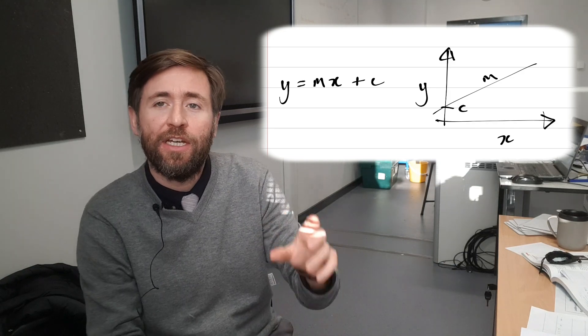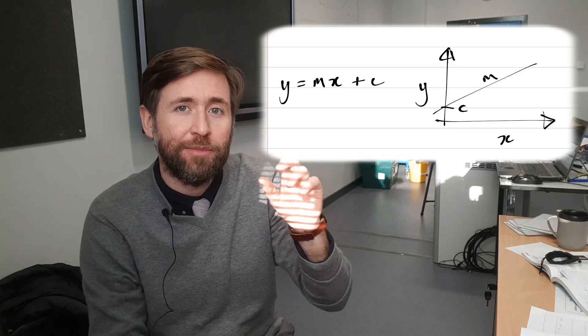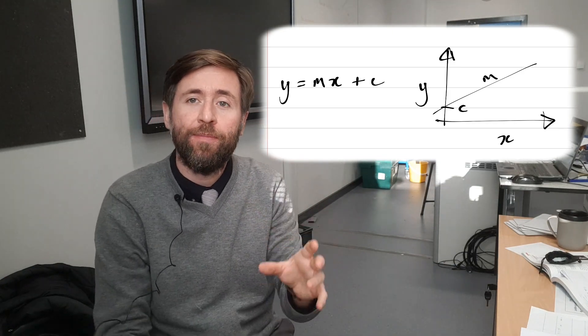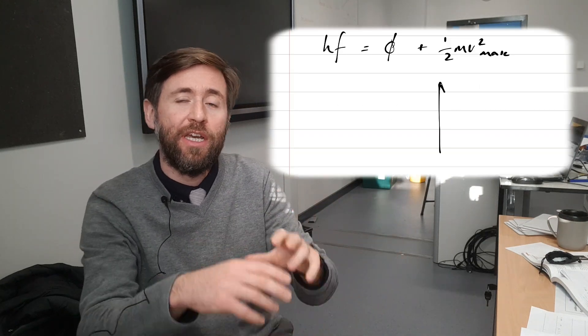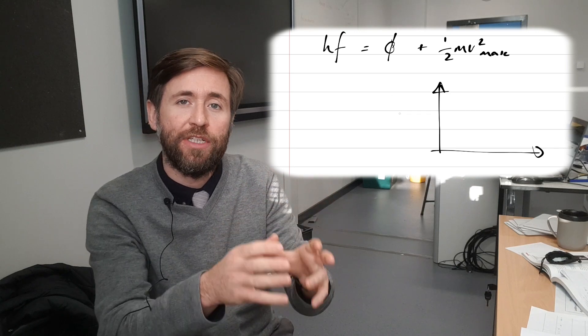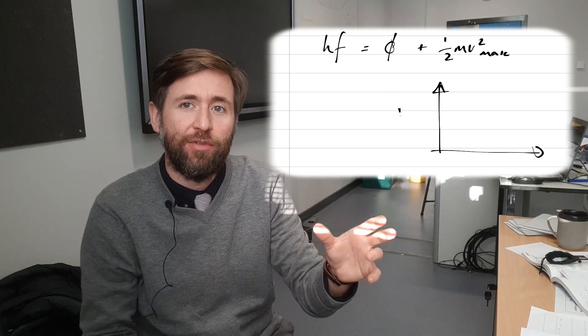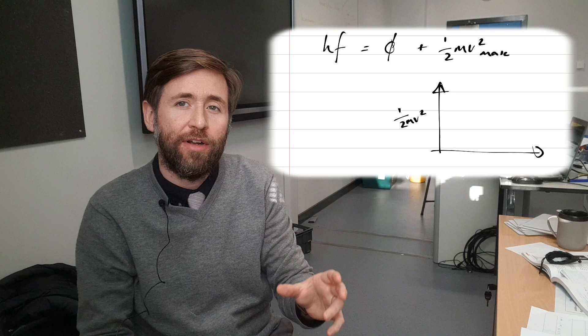So in this case, the y variable is the maximum kinetic energy. That's something we can measure. And the x variable is the frequency. Again, that's something we can measure. So we can change the frequency of our light, measure the kinetic energy of the electrons, and hey presto, we've got a graph. We find that's a straight line graph.